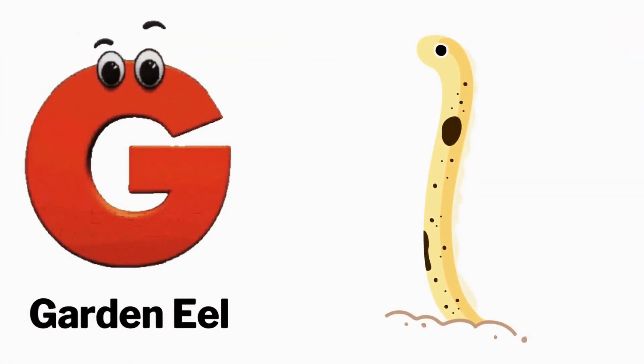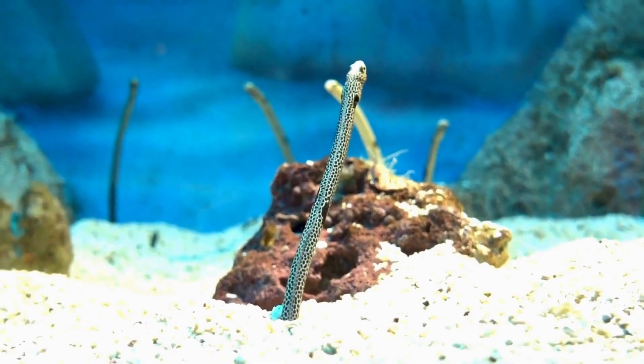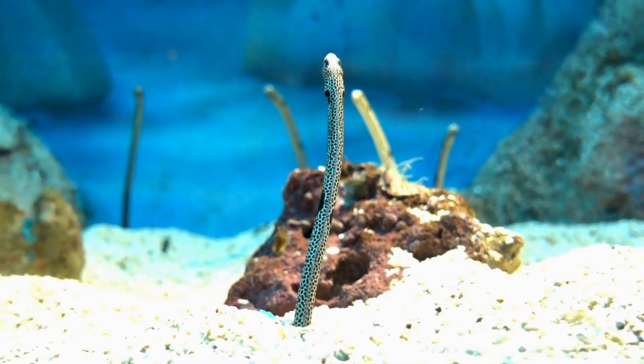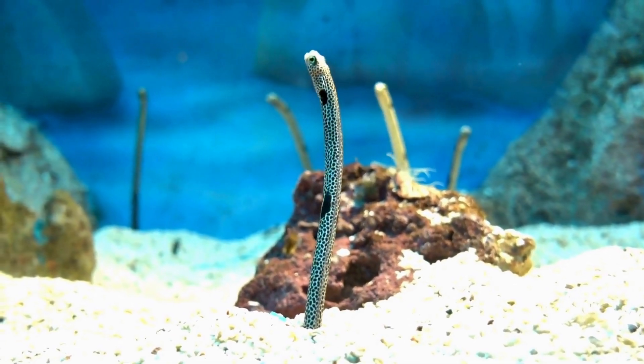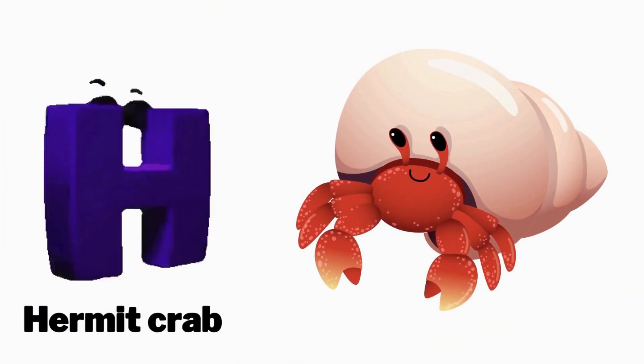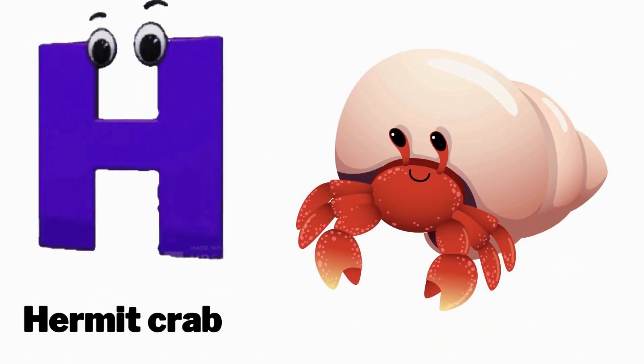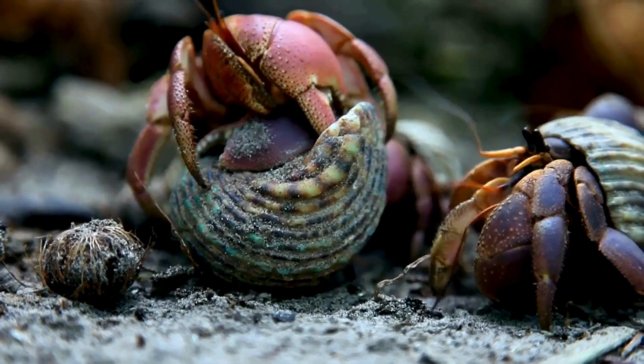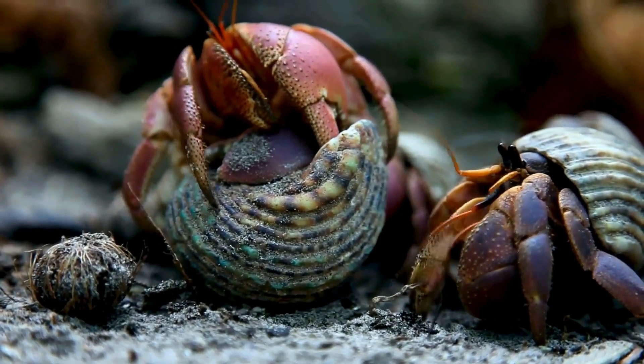G is for garden eel, G, G, garden eel. H is for hermit crowd, H, H, hermit crowd.